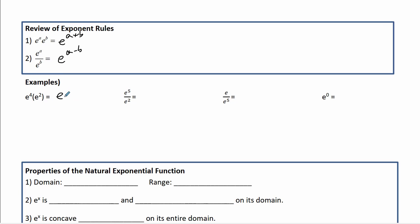So this is e to the 6th, this is e to the 3, this is e to the negative 4, and this is just 1. Anything to the 0 power is 1. I can put this as 1 over e to the 4, but it's not necessary. You can leave it as negative 4, that's fine.